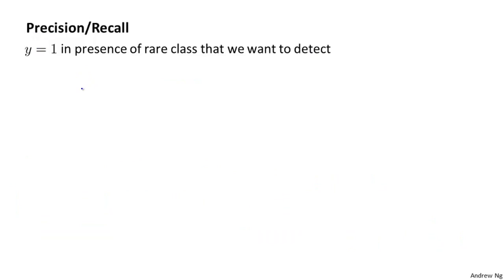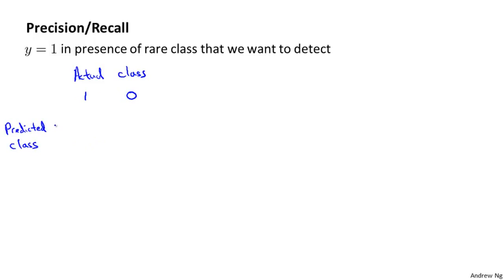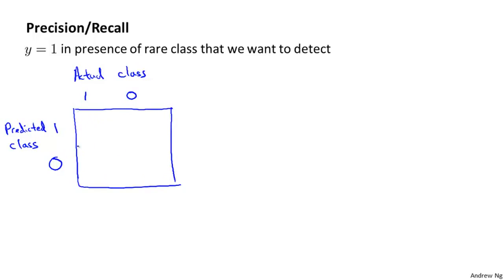Let's say we're evaluating a classifier on a test set. For each example in the test set, the actual class will be either 1 or 0 for a binary classification problem, and our learning algorithm will predict some value — also either 1 or 0 — for each example. Let me draw a 2 by 2 table, where I'll fill in entries depending on what was the actual class and what was the predicted class.